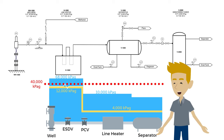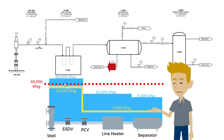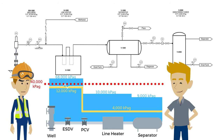The vessel is rated to 9,000 kPaG. From there, gas is sent to a sweetening unit, condensate is sent to a degasser, and water is collected in a tank.